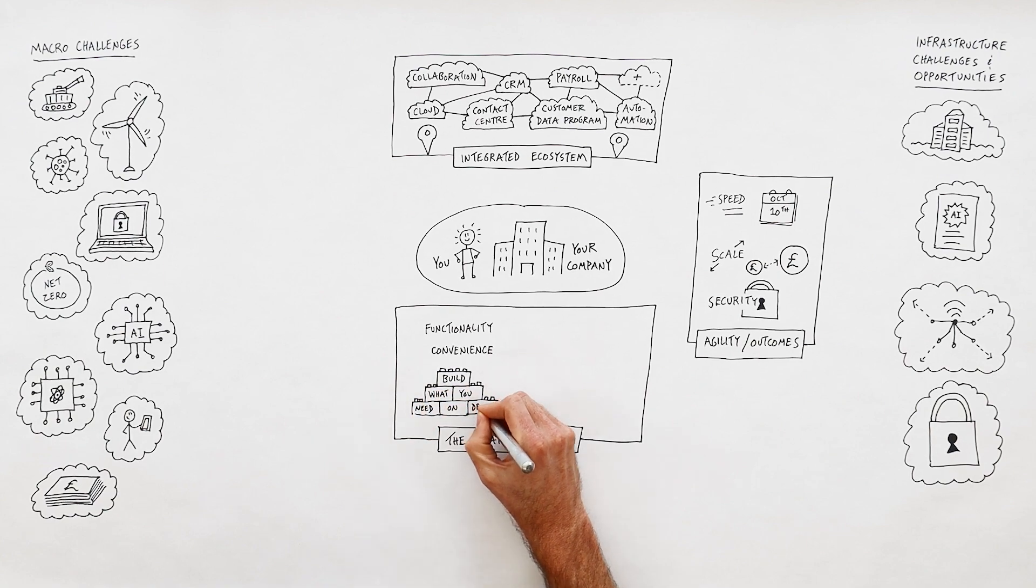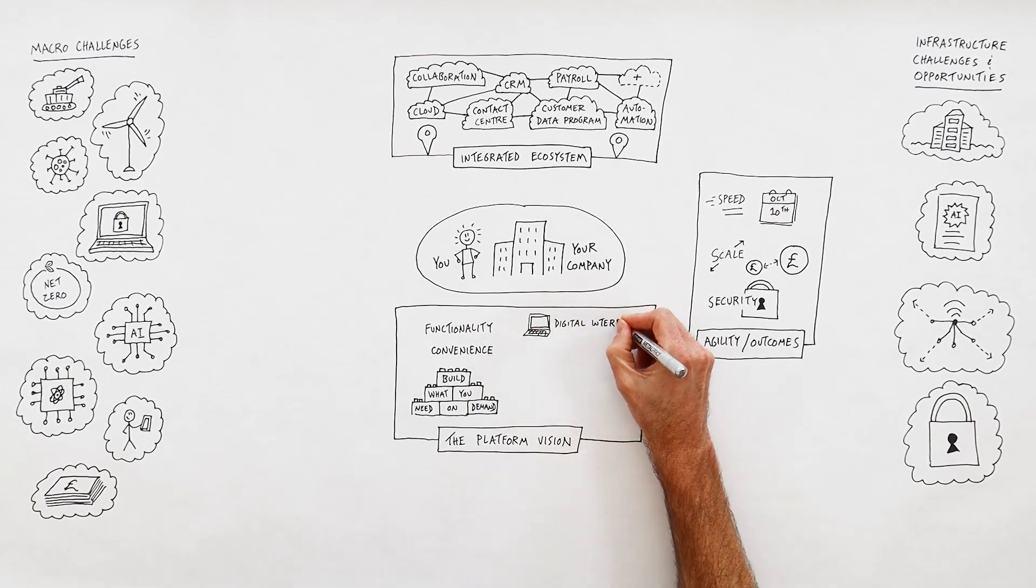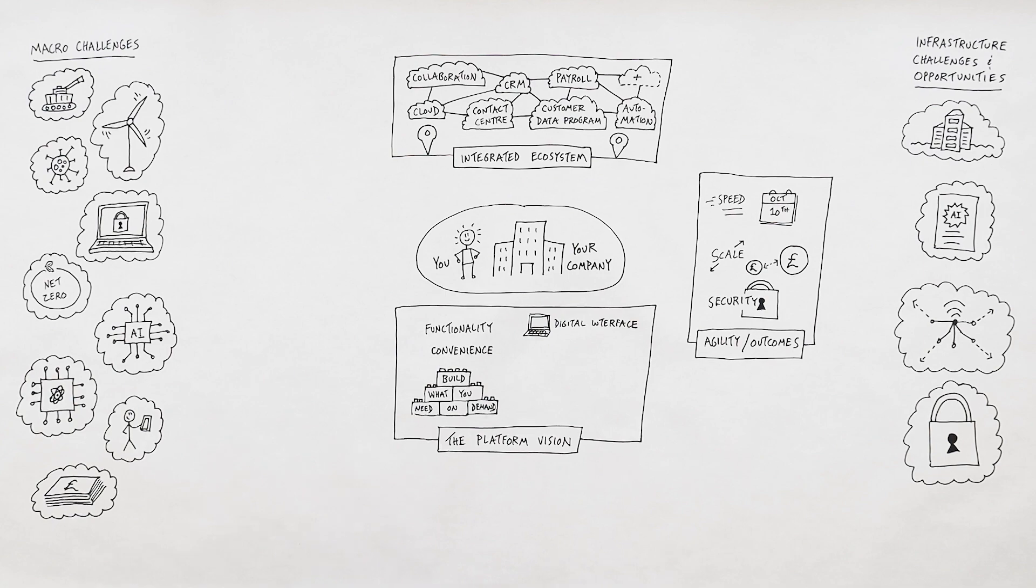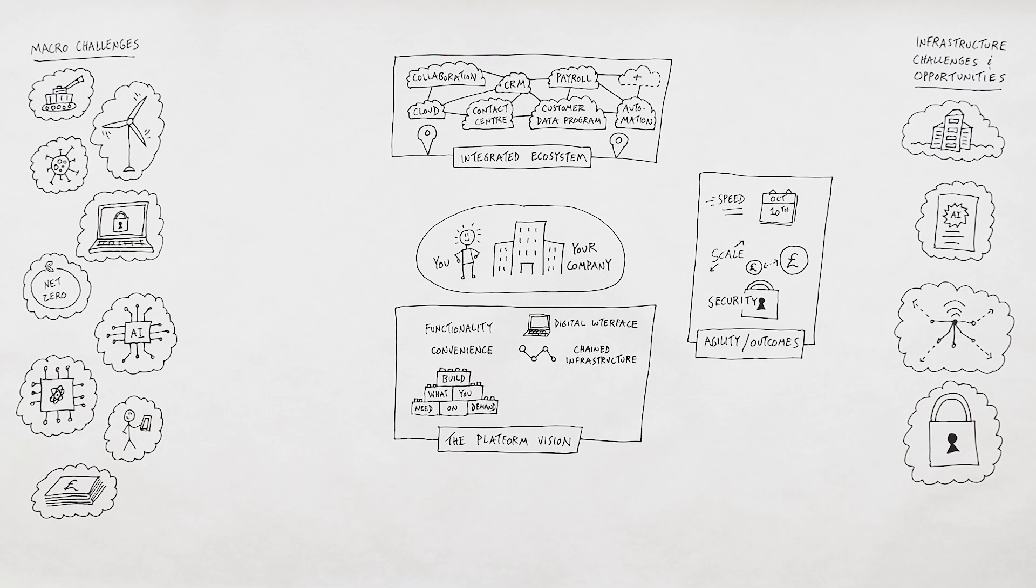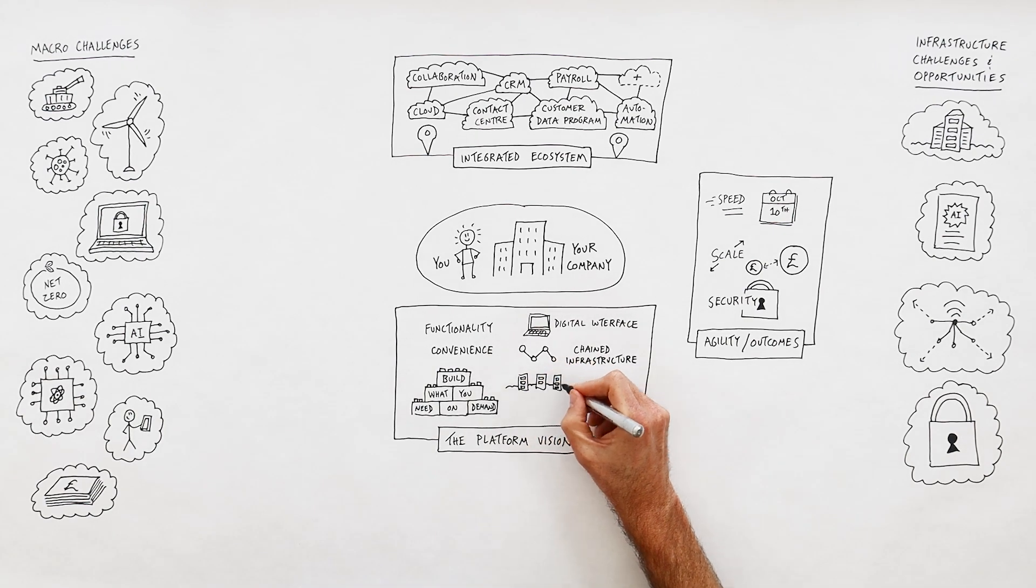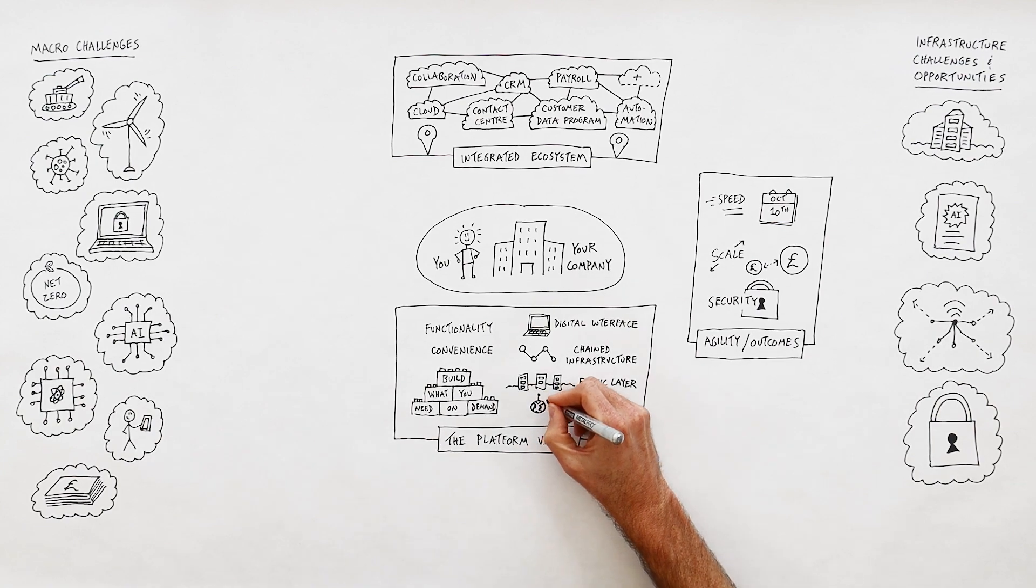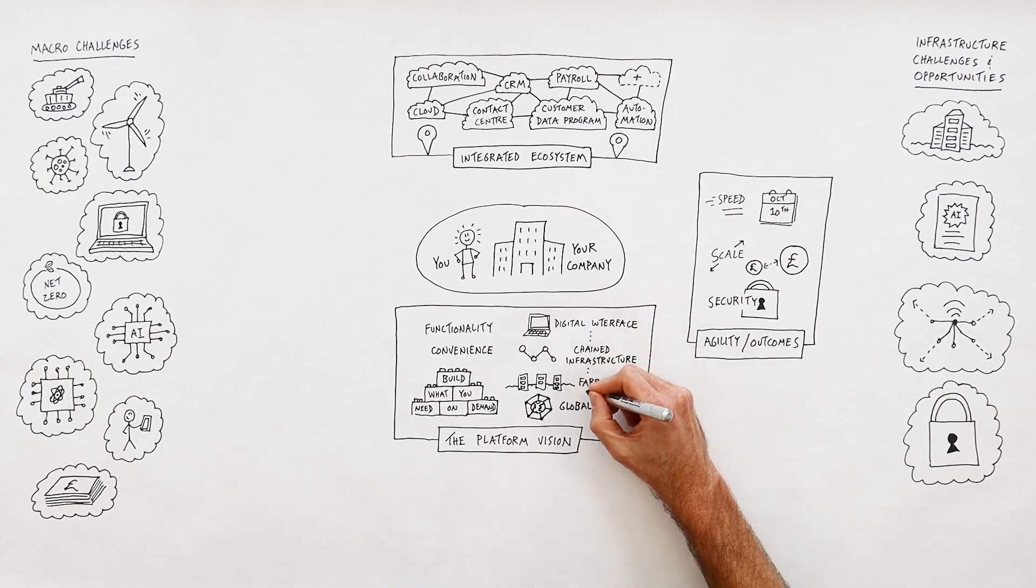A platform where strategies can be implemented on demand, not in the distant future. This platform would have to provide all four required layers of technology. One, a digital interface that gives you a cloud-like experience. Two, chained and programmable as-a-service infrastructure and security services from a large open ecosystem of partners. Three, a scalable network-based fabric layer enabling cloudification at scale. Four, a backbone and access that exploits the unique end-to-end performance of our global network.